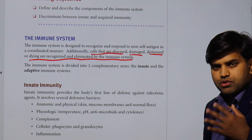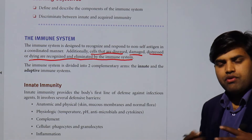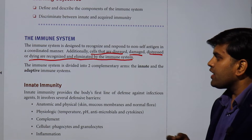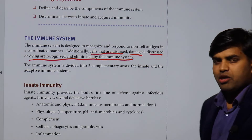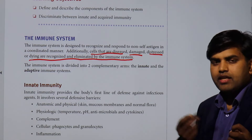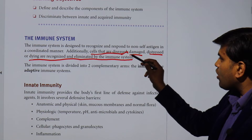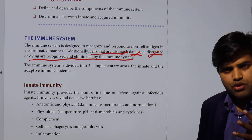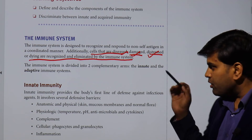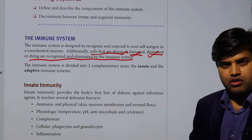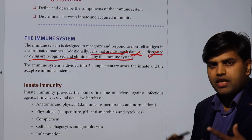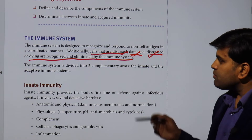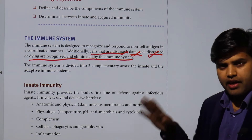So the immune system is responsible not only for clearing foreign substances, but also for eliminating diseased, damaged, distressed, or dying cells. These cells that are not useful for the body are also recognized and eliminated by the immune system. So there are two functions: clearing foreign substances and clearing dead or dying cells within your own body.